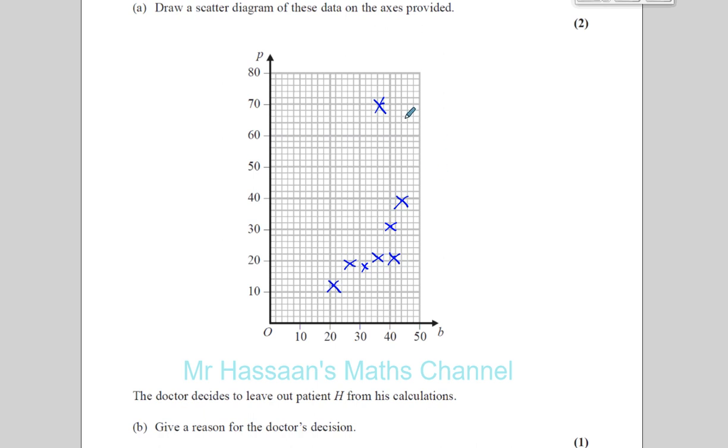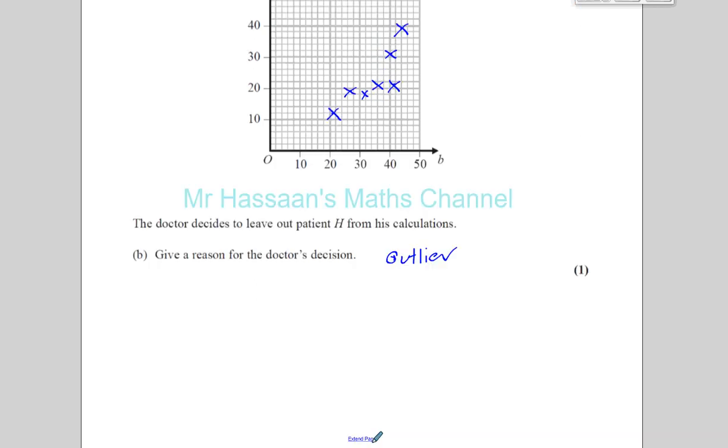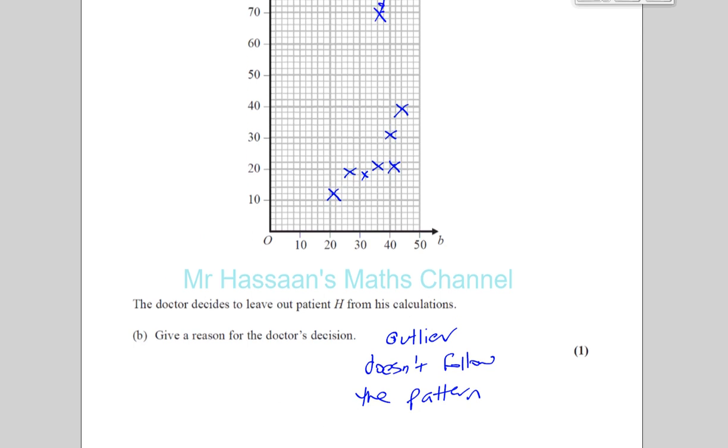Then it says the doctor decides to leave out patient H from his calculations. Now this is patient H here, this plot for patient H. Give a reason for the doctor's decision. Well, as you can see, it's way outside of the pattern for the data. You could say it's an outlier. Any idea like that, it's an outlier or you can say that it doesn't follow the pattern of the rest of the data. You can see that basically this is some sort of positive correlation, and this point H is kind of way outside of that. Some idea like outlier, doesn't follow the pattern, anomaly, any of these things would give the answer to this question.